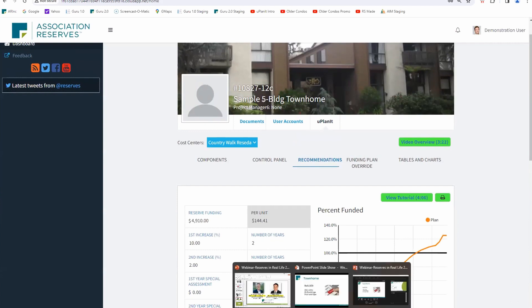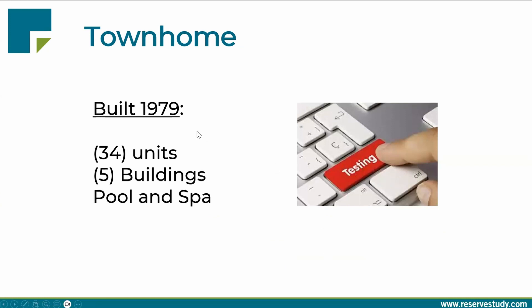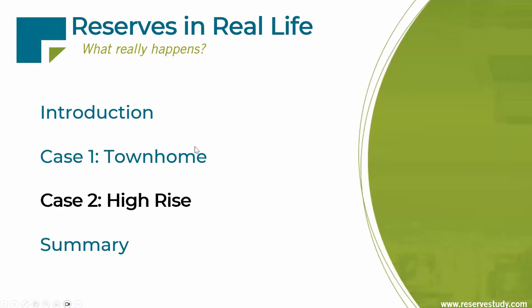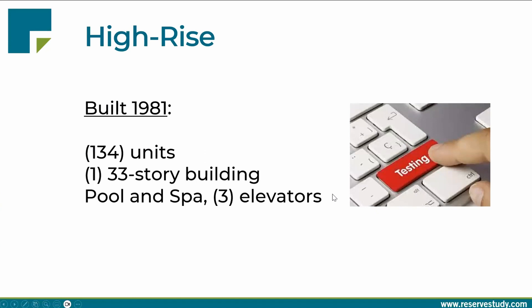That was the townhome association — how we look at things, how we look at the funding, the influences of different factors. Let's now turn to the high rise — a little more complicated situation, but the same type of basic principles: what are the components, what are your funding tools, what buttons can you press, and how are you going to communicate that to the homeowners? Here we are: 1981, 134 units, one 33-story building in a major metropolitan area, pool and spa up on the 33rd floor, and three elevators.